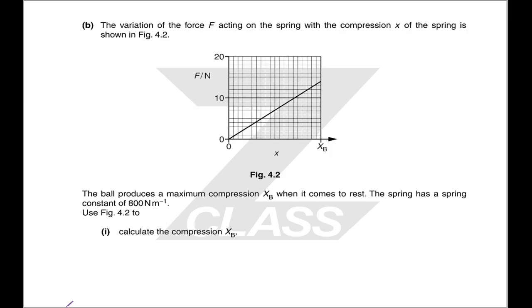We have a variation of force acting with distance. This is just a standard spring graph. The ball produces a maximum compression xb when it comes to rest. The spring has a certain spring constant. This is our F equals kx. And in this case, our force is due to gravity, and so that is mg, with m being the mass of the ball that we were introduced to earlier. And so therefore, we know k, we know mg is just a constant, and we can rearrange to find the compression x.